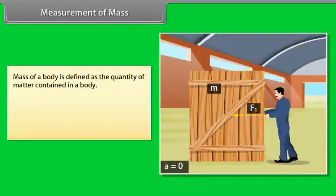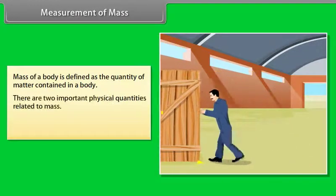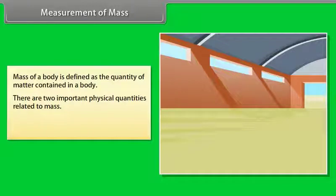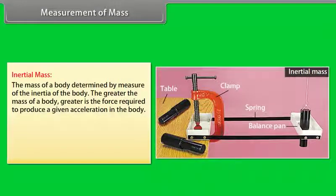Measurement of mass: Mass of a body is defined as the quantity of matter contained in a body. There are two important physical quantities related to mass of a body. These quantities are inertial mass and gravitational mass. Inertial mass: The mass of the body is determined by measure of the inertia of the body.